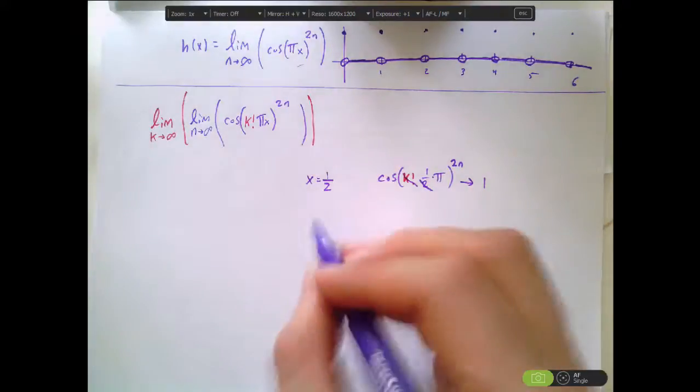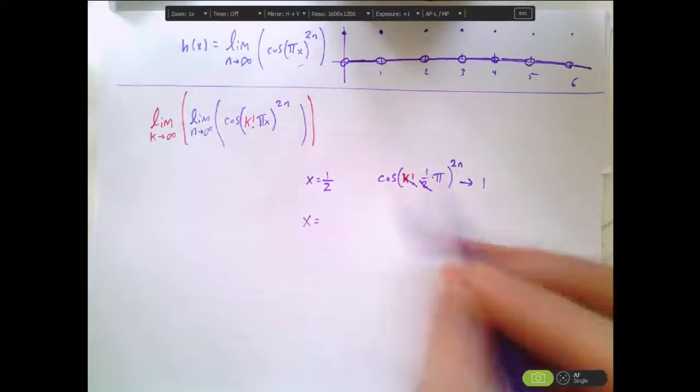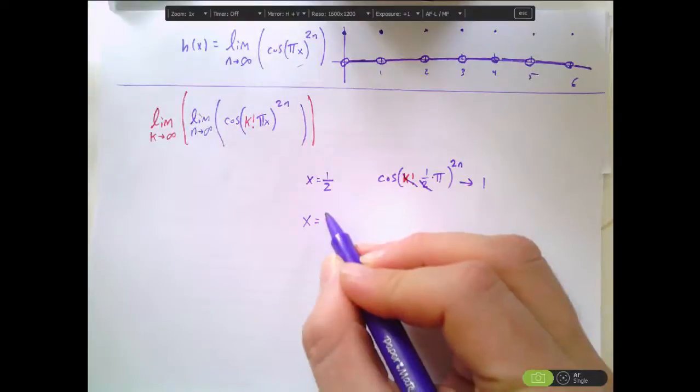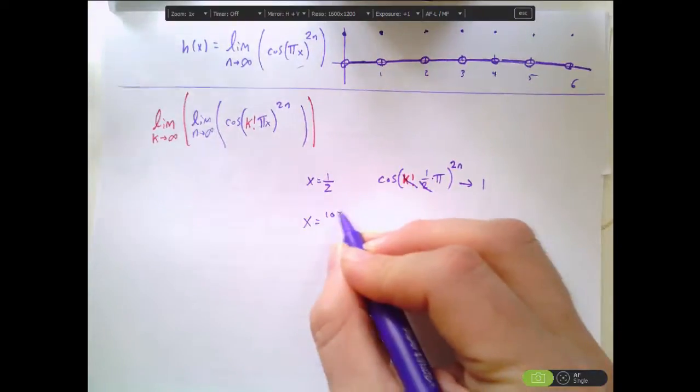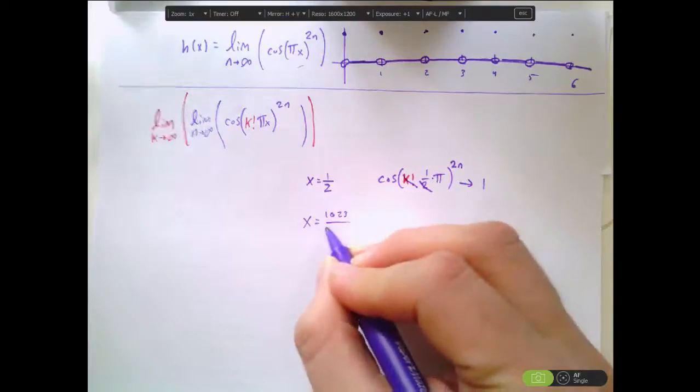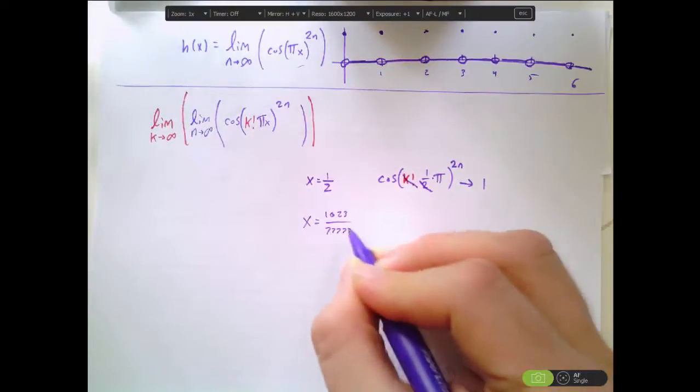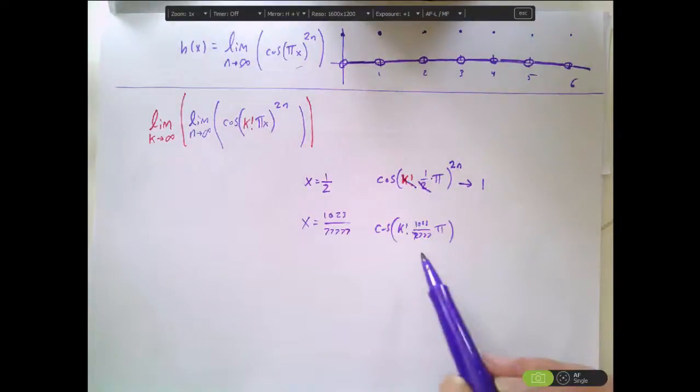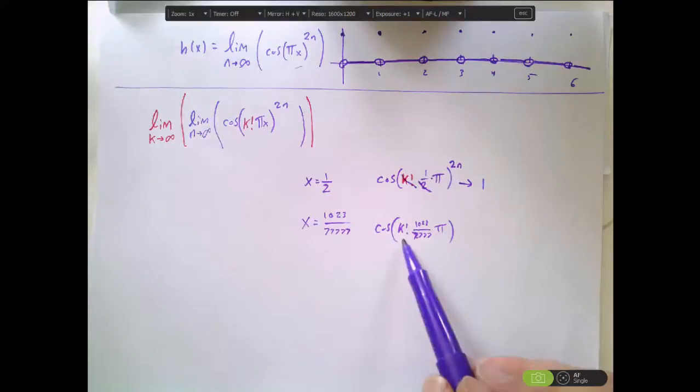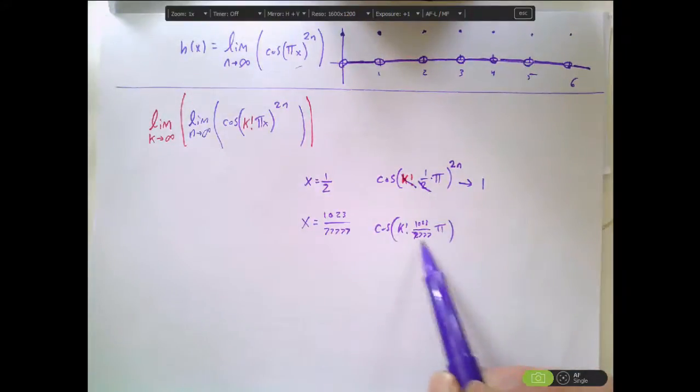So what that means is that when x = 1/2, because the k factorial canceled the denominator, we're still going to get out of this a positive 1. Let's look at a weirder example. What happens if we have some very strange rational number, like 1023 divided by 77777? That's a real ugly. So what's going to happen to this part as k approaches infinity? As k gets larger and larger, eventually k factorial is going to cancel out this 77777.